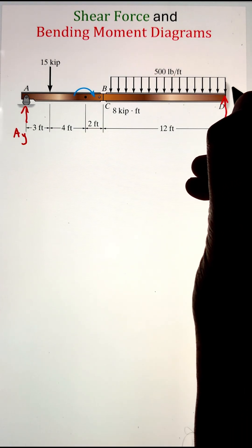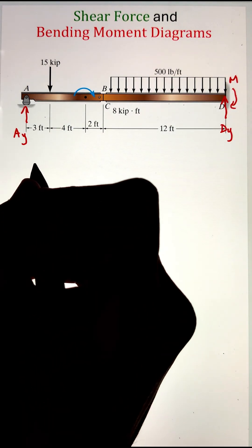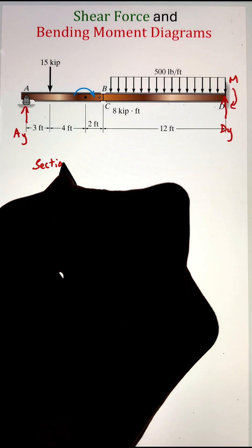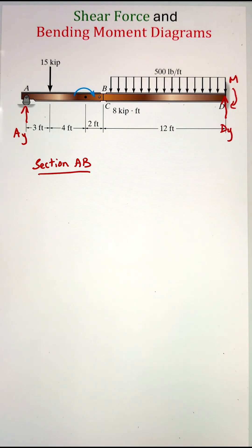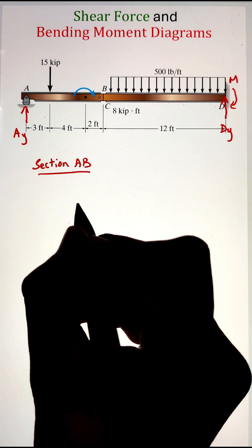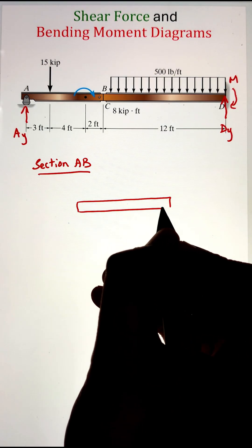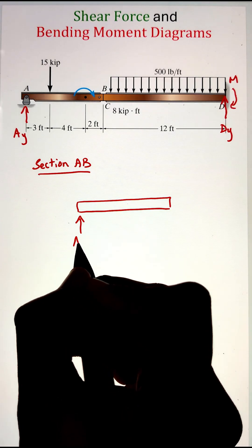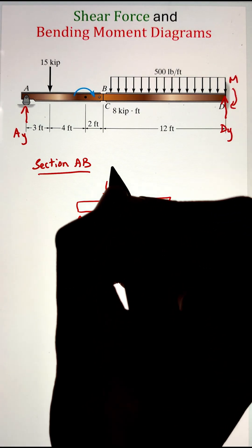Here we have at point A a rocker, which will have a support reaction going in the vertically upward direction. Next we have a fixed support at point D. Since we don't have any horizontal load, we don't have to worry about the support reaction in the X direction. However, we will have a support reaction in the Y direction as well as the couple moment M.